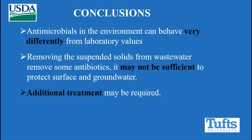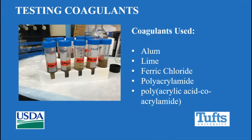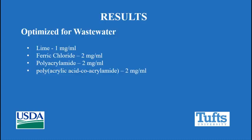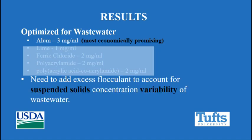We needed to figure out a way to also remove those antimicrobials remaining in the water portion, so additional treatment was needed. The second part of the study was to determine the optimal concentration of selected coagulants — again part of Katherine's PhD project. A range of coagulants were selected including polymers, alum, and lime. When she analyzed the partition coefficients, she found that alum worked the best and was also very economically promising.